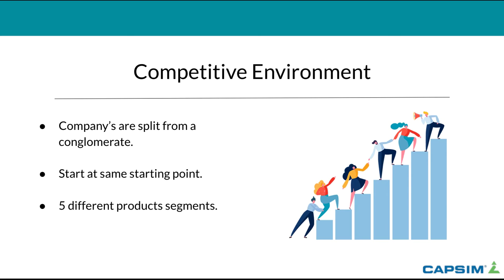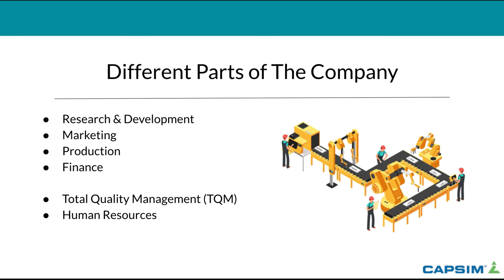So let's look at the different parts of the company. There are four main parts that every teacher is going to cover: research and development, marketing, production, and finance. Depending on what type of simulation you do and what your professor enables, you could also do total quality management (TQM) or human resources. There are also additional modules in the marketing section.